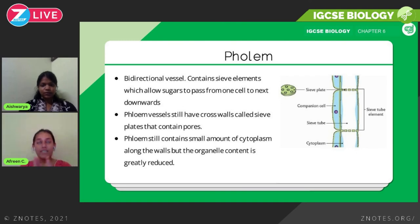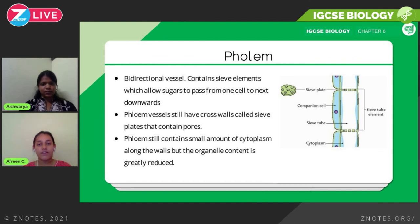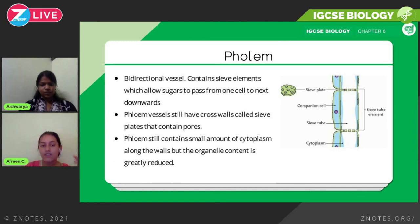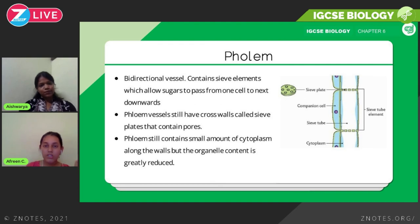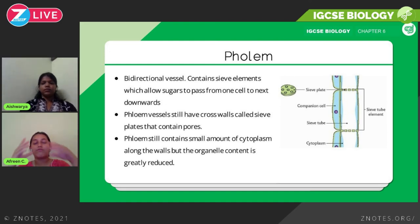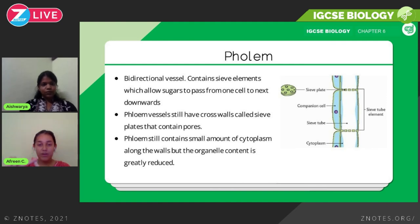Unlike the xylem, the phloem is a bidirectional vessel — its contents, amino acids and sucrose, can move in two different directions. Each part of the phloem has a sieve plate, which allows sugars to pass from one cell to the next. Phloem contains a small amount of cytoplasm along the walls, but most organelles are greatly reduced as their only purpose is to form a transport vessel — no photosynthesis occurs here.